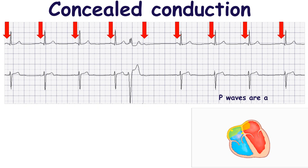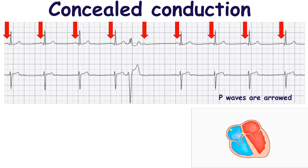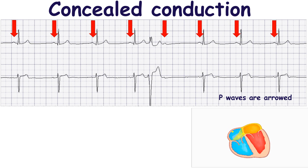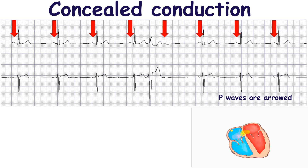The premature ventricular complex spreads to the atrioventricular node and partially depolarizes it, but the impulse does not pass to the atria, so the atria are not depolarized by the impulse. The sinoatrial node then produces the next P-wave without any delay.